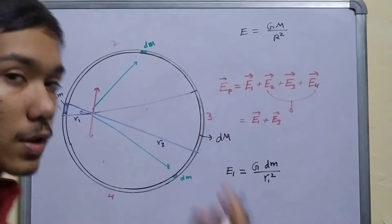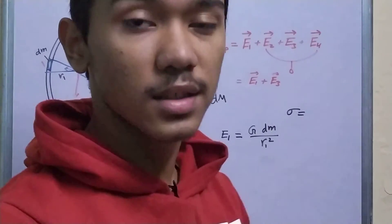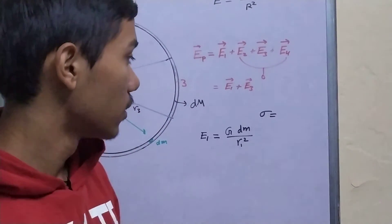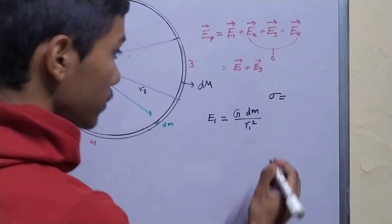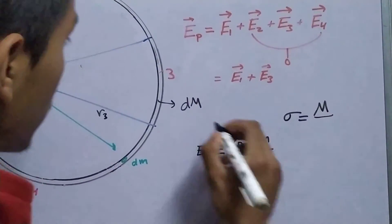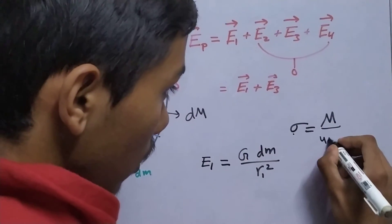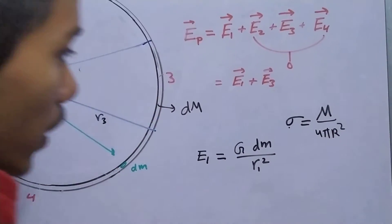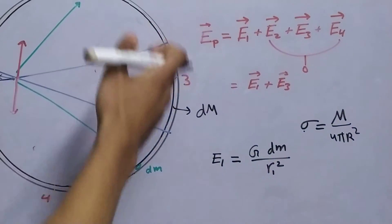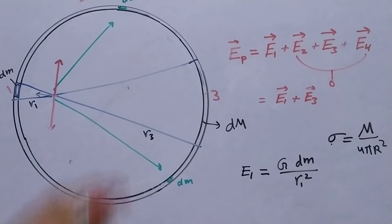Now, if your sphere is uniform, then it will have a constant surface density, or constant mass density. If m is the total mass, then the surface density will be total mass upon total area, 4 pi r square, since all of the mass is outside, in a spherical region, there's nothing inside.